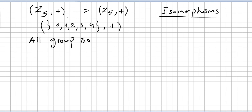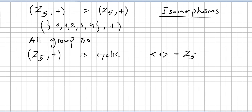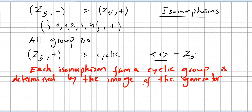Describe all group isomorphisms from Z5 under addition to Z5 under addition. First, we should note that Z5 under addition is cyclic, and one generates Z5, so 1 is the generator of Z5. Each isomorphism from a cyclic group is determined by the image of the generator.